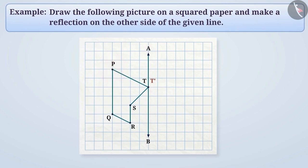Point P is 4 squares away from the mirror line and T is 2 squares below. In the same way, we will count 4 squares on the right from the mirror line and we will mark P prime, which is 2 squares above T prime.